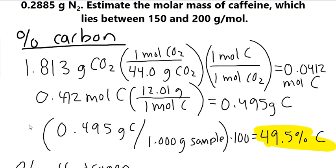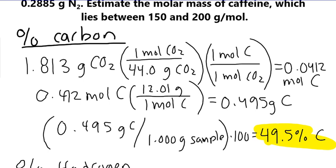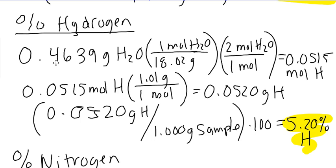Walking through the answer — percent carbon: we use carbon dioxide to get to moles of carbon, then grams of carbon divided by the one-gram sample, giving us 49.5% carbon. For hydrogen, similarly: grams of water to moles of hydrogen, moles of hydrogen to grams of hydrogen, divided by the sample, gives 5.2% hydrogen.